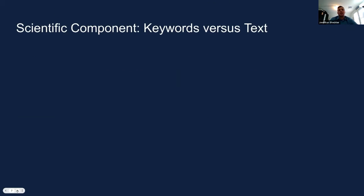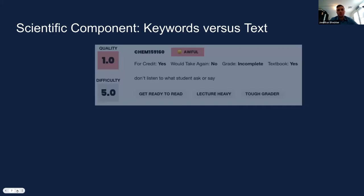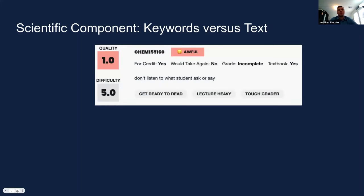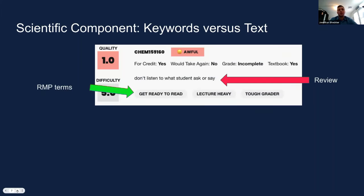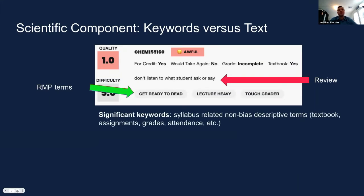To take a look at how our compatibility assessment is analyzing the reviews, let's look at a Rate My Professor review. A typical review consists of two things: the student-written text or review, and the student-selected Rate My Professor key terms. In order to minimize bias in our algorithm, we had our algorithm look for what we are calling significant keywords. Significant keywords are defined as syllabus-related, non-biased descriptive terms — such as textbooks, assignments, grades, and attendance — rather than subjective or opinionated information.